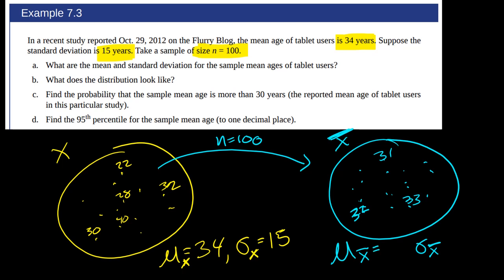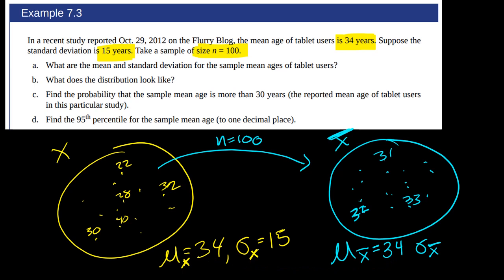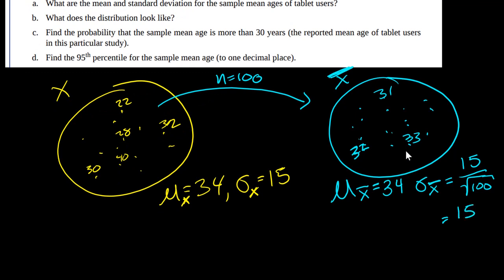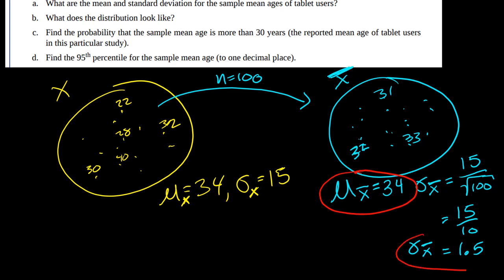By the central limit theorem, we know that the mean is going to be exactly the same — 34 — the same as the population mean. Then the standard deviation of X̄ is going to be the standard deviation of X, which is 15, divided by the square root of the sample size, 100. That equals 15 divided by 10, which is 1.5. So σ X̄ is 1.5. That's the answer to part A.